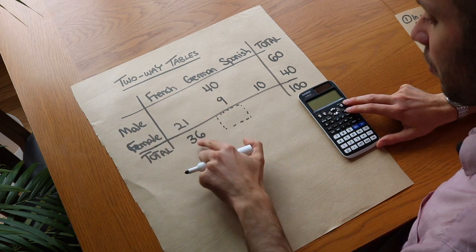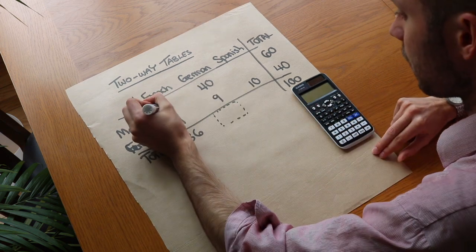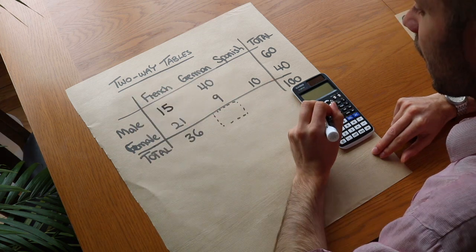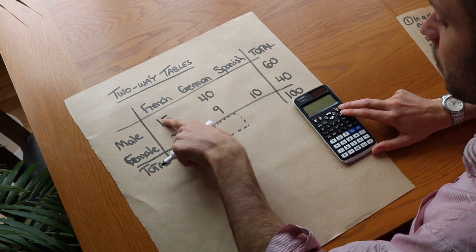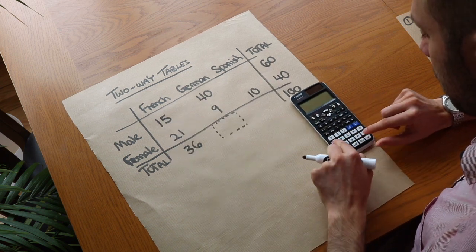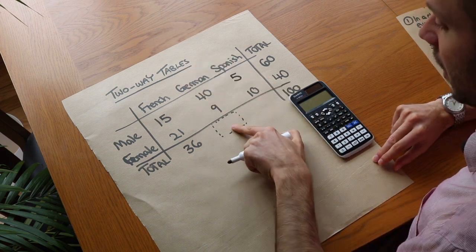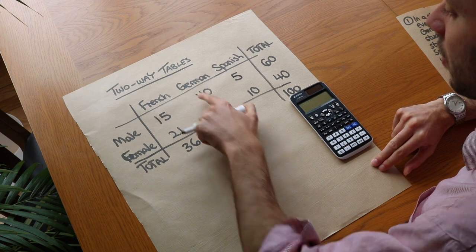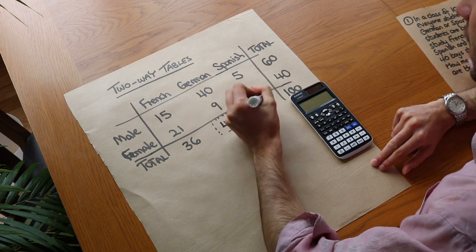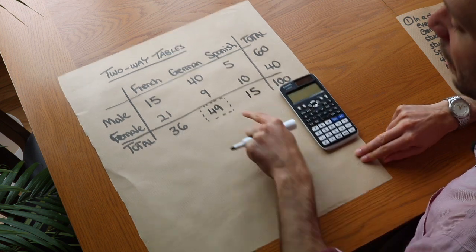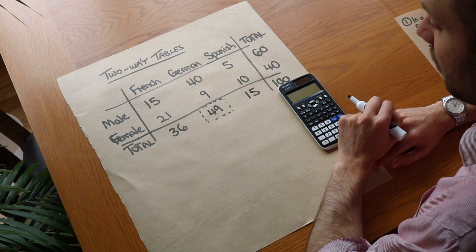We can also work out the number of males who study French because we do 36 minus 21 and that gives us 15 and that means we can work out the number of boys who study Spanish so if we just do 60 minus the 40 and the 15. 60 minus 40 minus 15 and that gives us 5 and now we can add these up to get the total in each column so 40 plus 9 is 49 and 5 plus 10 is 15 and that's the number we wanted we wanted the total number of German speakers and we can see that it's 49.